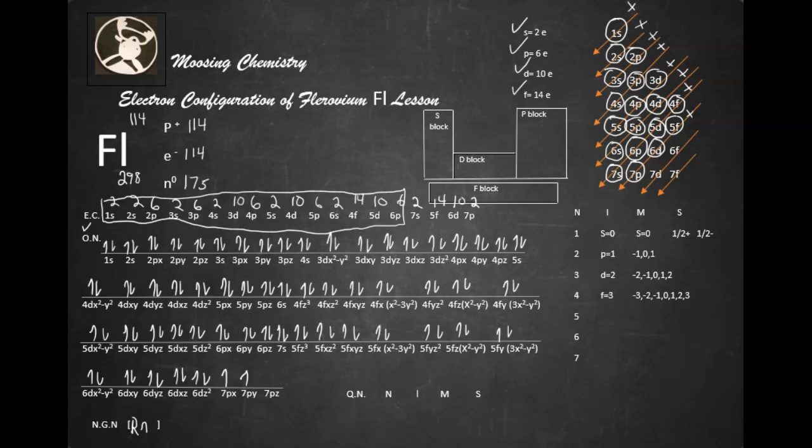Now, what we're going to do is we're going to write it in order. Some people like to put it as 7s2, 5f14, 6d10, 7p2, but technically that's not correct. You really should put them in a order of like numerical order. So it'd be 5f14, 6d10, 7s2, and then finally 7p2.